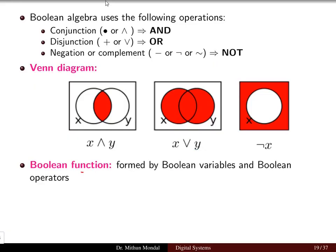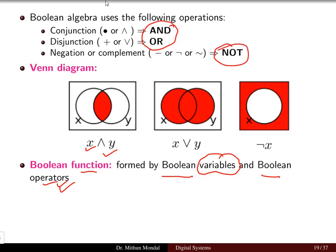A Boolean function is formed by Boolean variables and Boolean operators. The variables are Boolean, like X and Y, and the operators — addition, subtraction, division — are basically defined by the three functions AND, OR, and NOT.